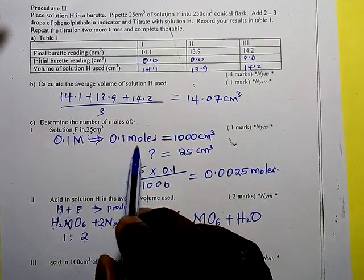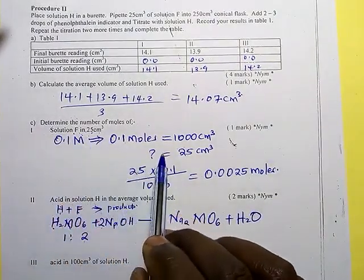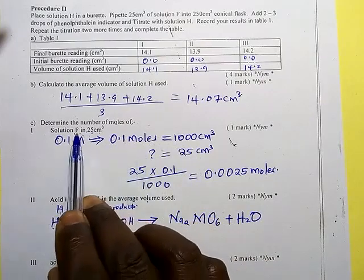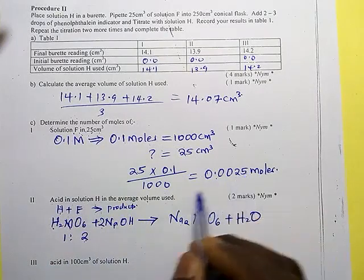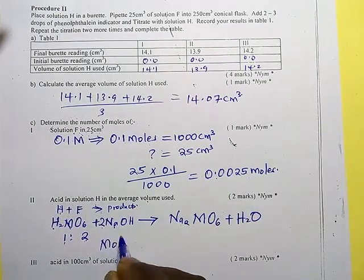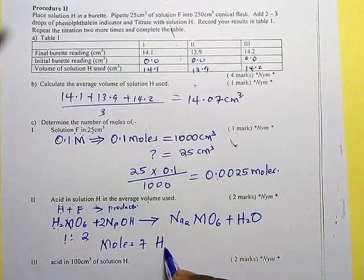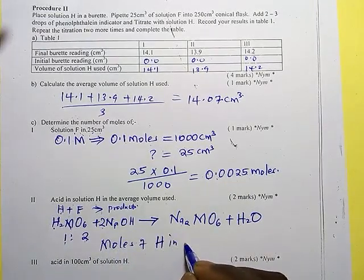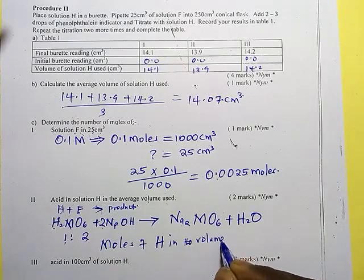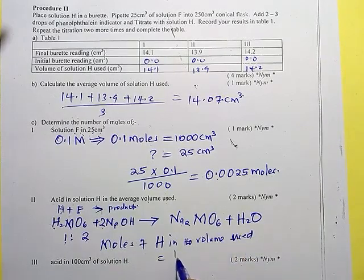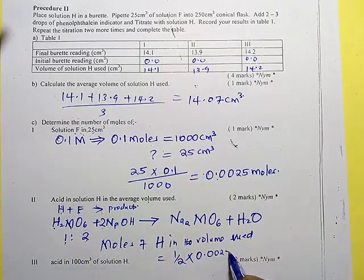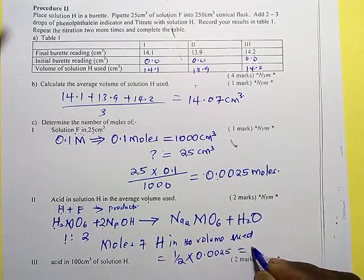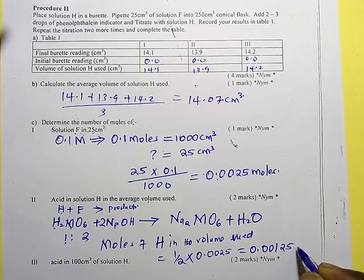We have the number of moles of the base F which reacted. If 2 moles of NaOH corresponds to 0.0025 moles, then the moles of acid H in the volume used equals one half times 0.0025, which is 0.00125 moles.